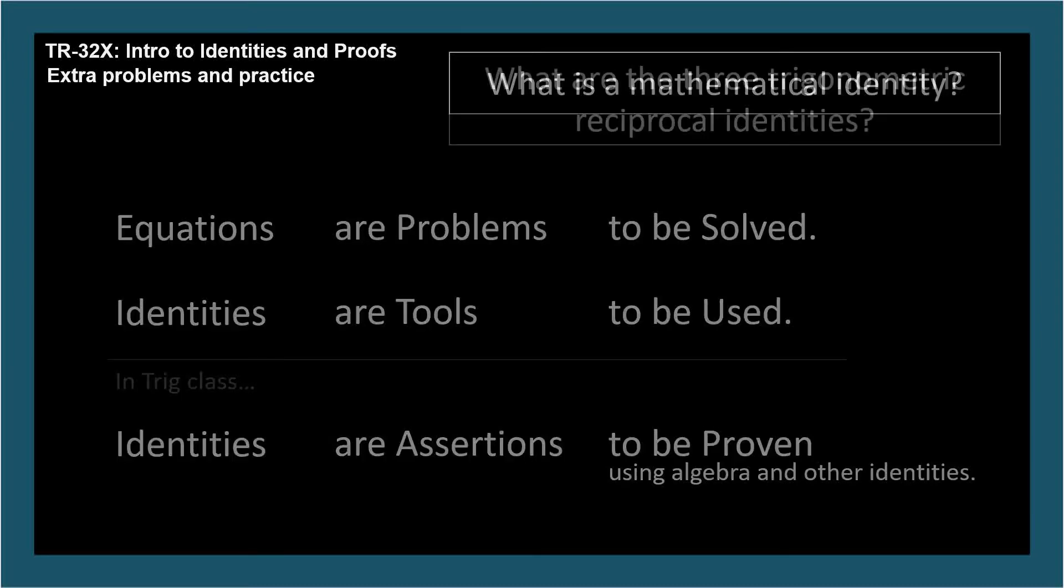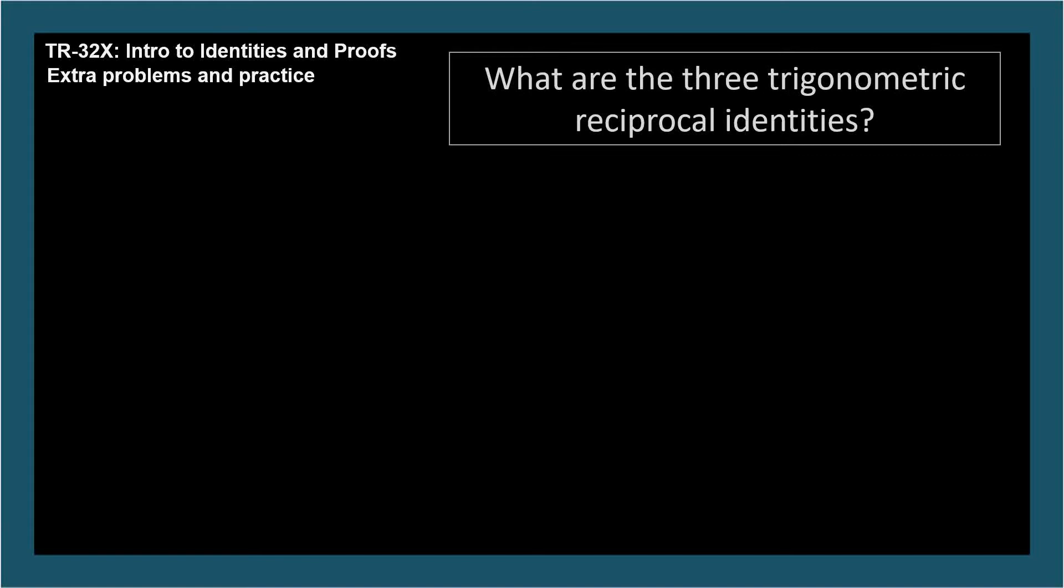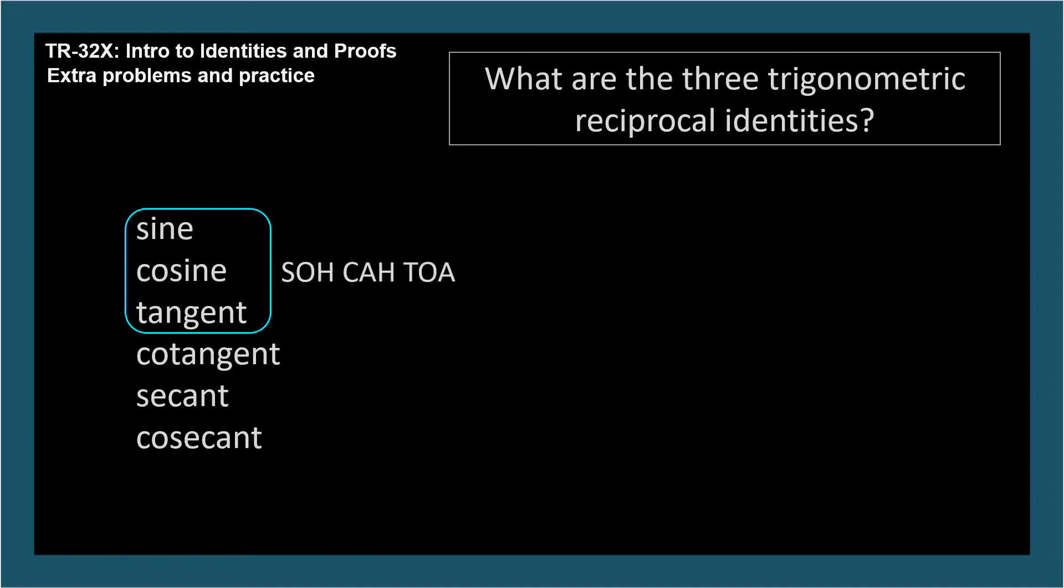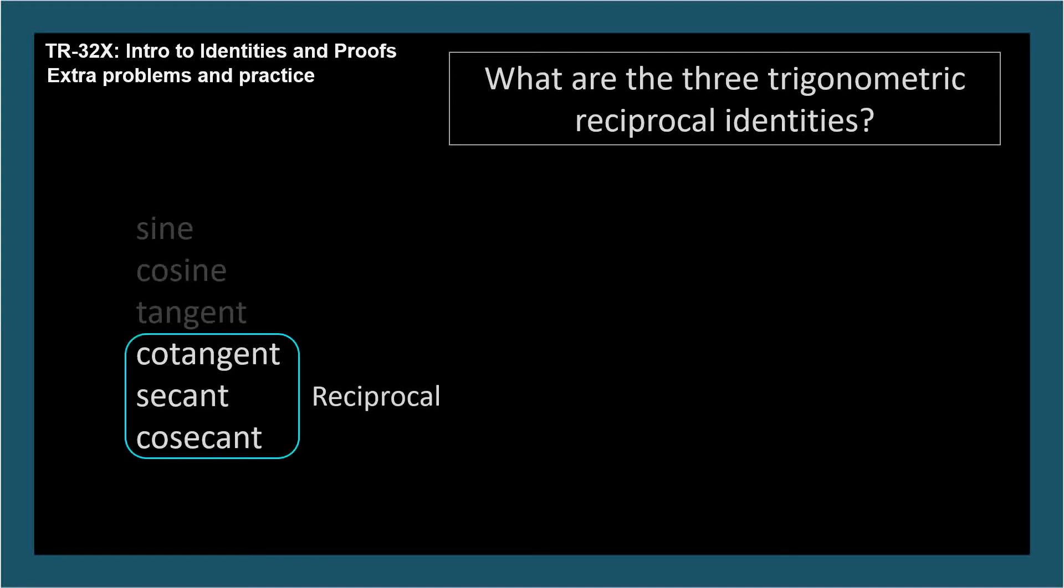What are the three trigonometric reciprocal identities? You might find it helpful to list out the trig function names in the order we learned in TR-14. The first three are the SOHCAHTOA functions, sine, cosine, and tangent. The last three are the reciprocal functions for which we can define the reciprocal identities. Let's start with cotangent. Using our bridge technique, we can see that its reciprocal is tangent. And there we go. Cotangent equals 1 over tangent.